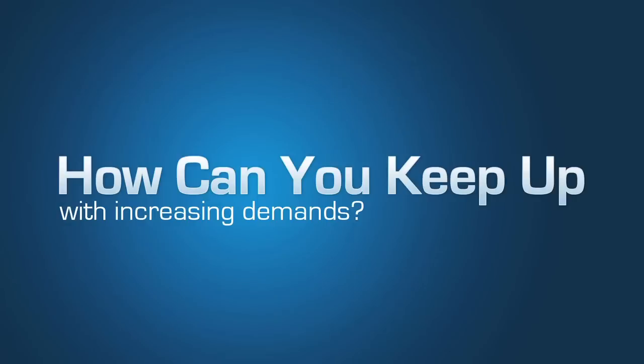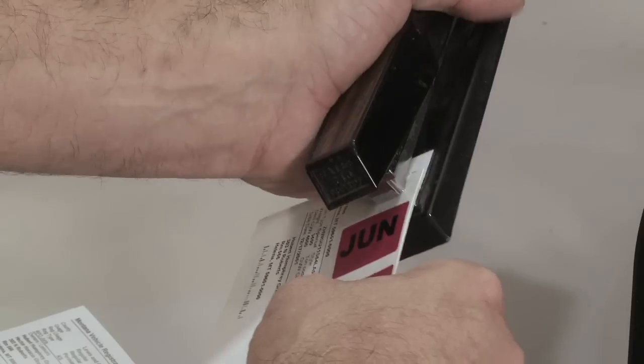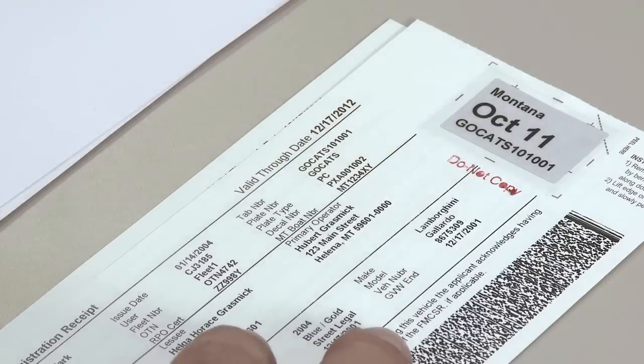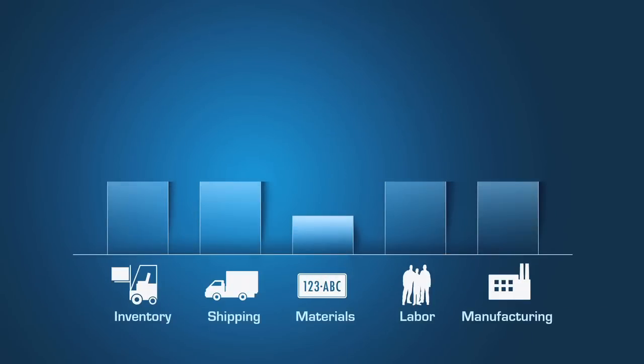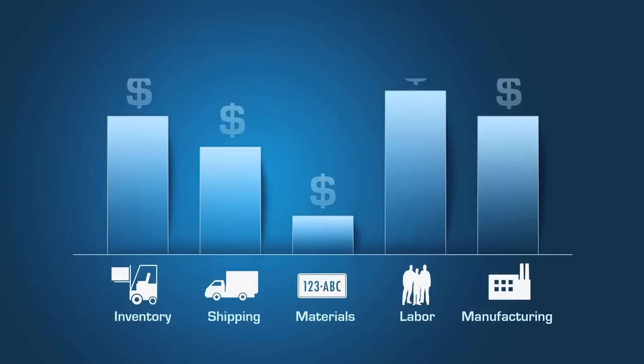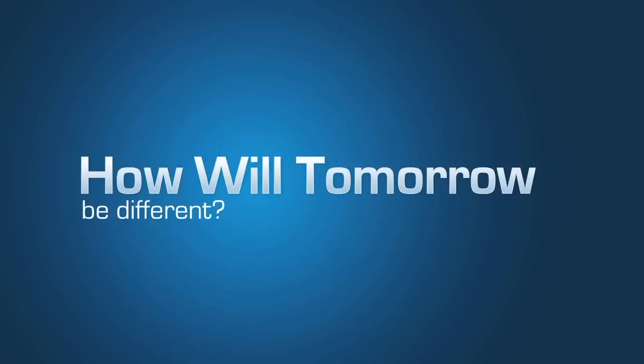So how can you keep up with increasing demands using outmoded manual processes? Today we are expected to do more with less. Inventory and transaction costs are continuing to increase. So how will tomorrow be different?